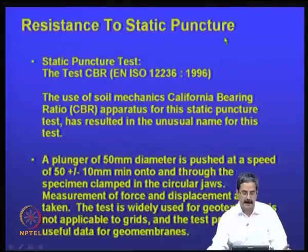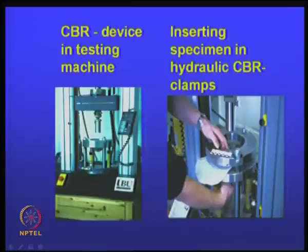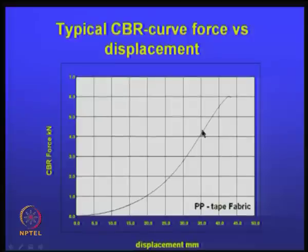Resistance to static puncture is essentially a modification of the CBR test. A punch is used to make a puncture in the material, and load versus deformation is measured — similar to a CBR test. This is tested on materials like polypropylene tape fabric to assess how much load the material can take before puncture.